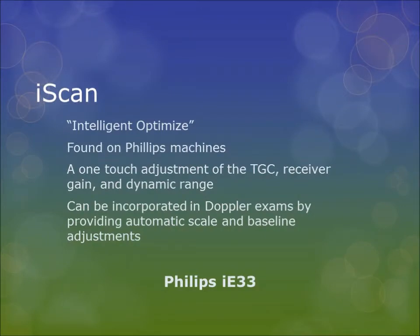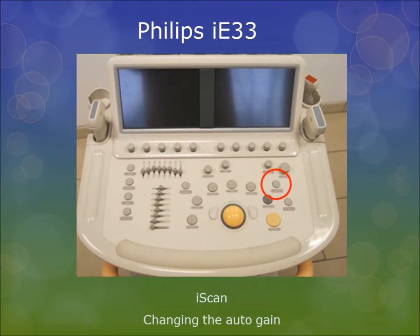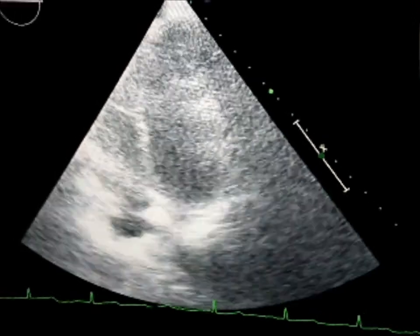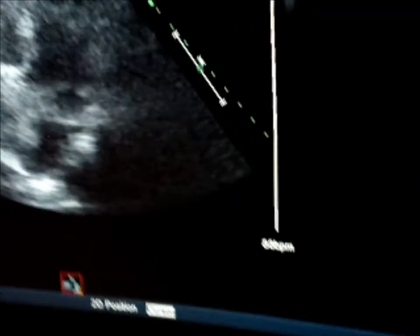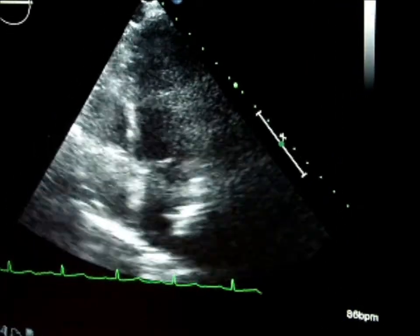iScan, or Intelligent Optimize, is found on the Philips machines. iScan is a one-touch adjustment of the TGC, receiver gain, and dynamic range, and can be incorporated in Doppler exams by providing automatic scale and baseline adjustments. Here is an echocardiographic clip from the apical window. As we begin imaging, the overall gain setting results in poor image quality. After iScan is applied, a decrease in overall gain can be appreciated. Please note that the artifact resulting from the patient's rib has no significance in the auto-gain setting.